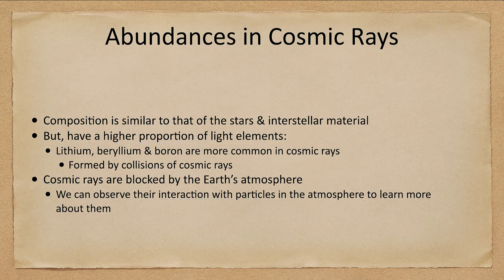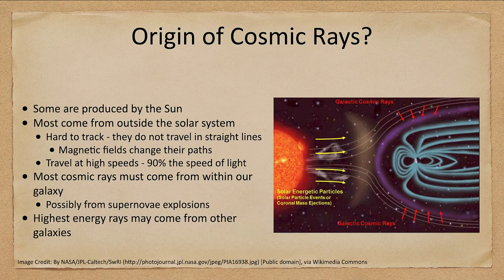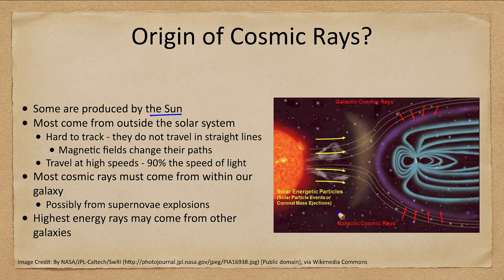Where do cosmic rays come from? They have a couple of different sources. Some are produced by our Sun — coronal mass ejections will eject particles towards Earth, which can be a source of some cosmic rays. Most, however, come from outside the solar system.